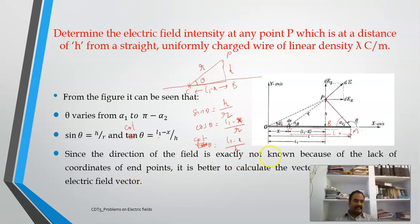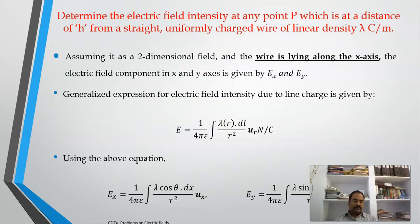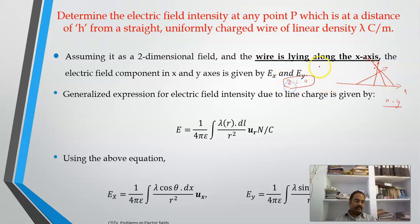Since the direction of the field is not exactly known, I will first compute the vector components and then finalize the direction of the electrostatic field. Since I am considering this as a two-dimensional problem, my wire is along the x direction and the point is in the y direction. I will consider only x and y dimensions, taking z as 0. The wire lies along the x-axis and my point of observation is on the y-axis.